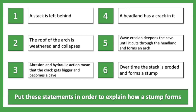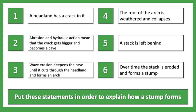We're about to reveal the answer. The correct order is: a headland has a crack in it; abrasion and hydraulic action means the crack gets bigger and becomes a cave — note we've used specific processes of erosion; wave erosion deepens the cave until it cuts through the headland and forms an arch; the roof of the arch is weathered and collapses; a stack is left behind; and over time the stack is eroded and forms a stump. Well done if you got those in the right order.